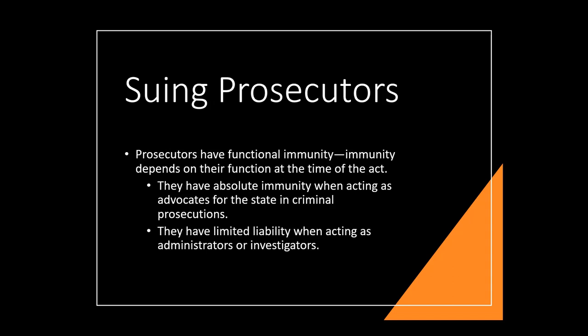Prosecutors have functional immunity. They have absolute immunity when they're acting as advocates for the state. If they're performing administrative or investigatory duties, they have limited liability — still very hard to get to them, a little bit easier than a judge but very, very hard. So: judges have absolute immunity, and prosecutors have functional immunity and are probably going to skate. Your book outlined several cases on the functional immunity doctrine: Patchman from 1976, Reed from 1991, Fitzsimmons from 1993, and Fletcher from 1997.